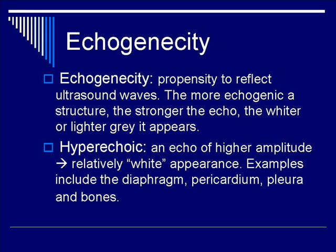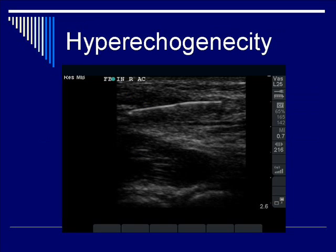This next slide shows an ultrasound scan of a hypodermic needle within the surface of a patient's forearm. You can see a long, linear structure with a hyperechoic nature. Compared to surrounding structures, the return echo amplitude is definitely greater than that of the surrounding soft tissue. As an arrow points to this hypodermic needle, you can see it is a very useful property of the metal, because it stands out clearly within the ultrasound image.